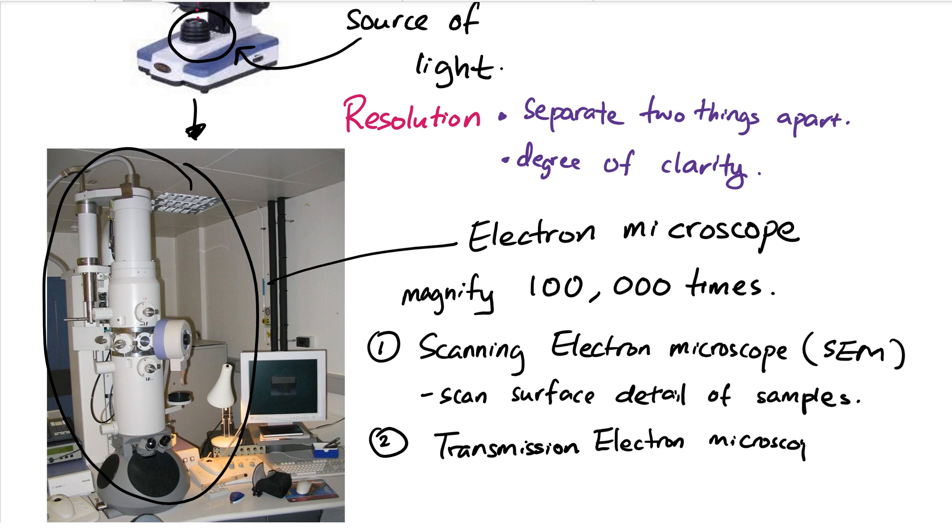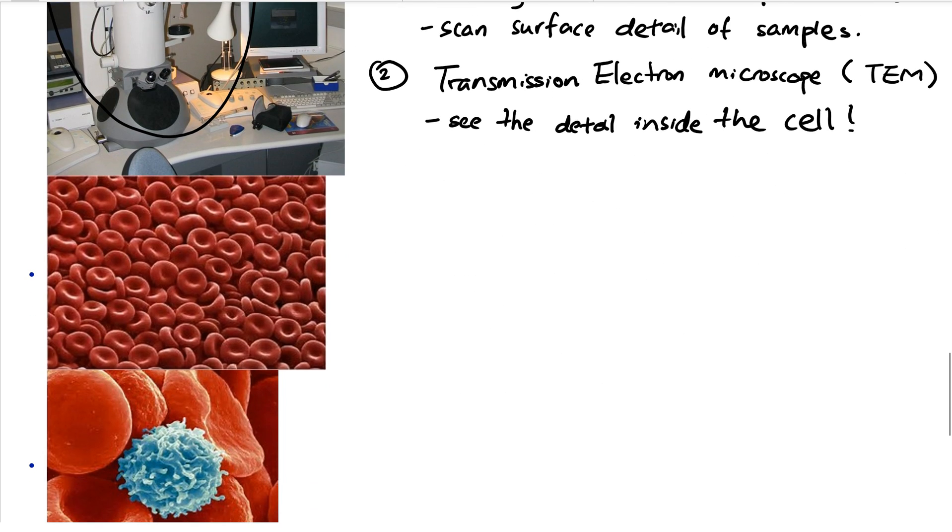The second is a transmission electron microscope. The transmission electron microscope can transmit through the cell, and you'll be able to see the detail inside the cell. Here are two examples where we can see using scanning electron microscope.